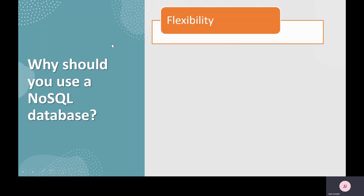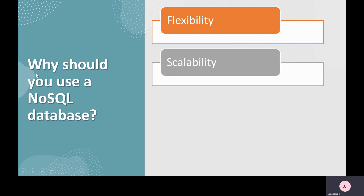What do we mean by flexibility? NoSQL databases provide a flexible schema that enables faster and more iterative development. The flexible data model makes NoSQL databases ideal for semi-structured and unstructured data. For scalability, NoSQL databases are designed to scale out by using a distributed cluster of hardware, instead of scaling up by adding expensive, robust servers. Some cloud providers handle this operation behind the scenes as a fully managed service.